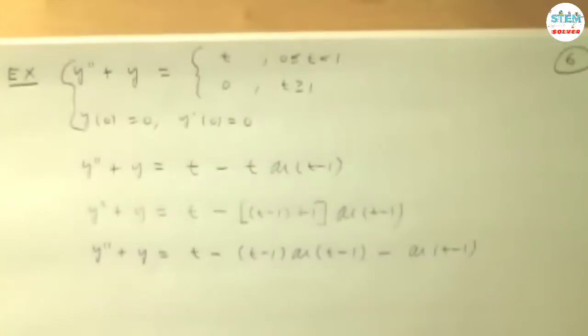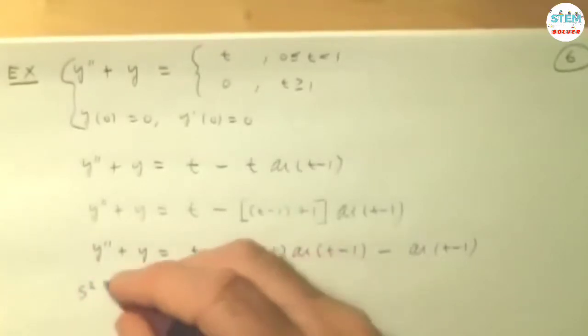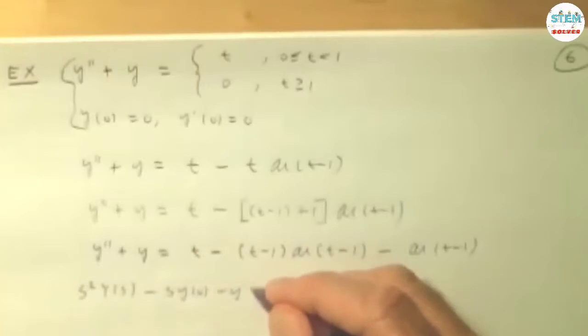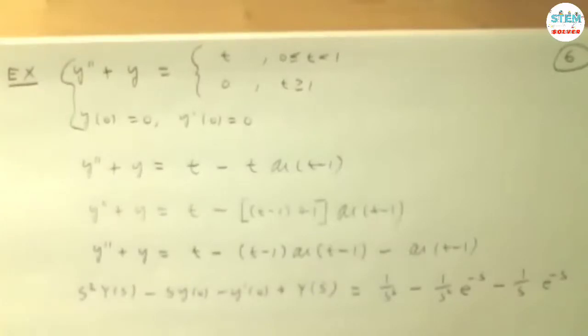So if we take Laplace transform, we're going to have s squared y of s minus s y of 0 minus y prime of 0 plus capital Y of s. On the right-hand side, we're going to have 1 over s squared minus 1 over s squared e to the negative s minus 1 over s e to the negative s. So that gets us the Laplace transform that we need.